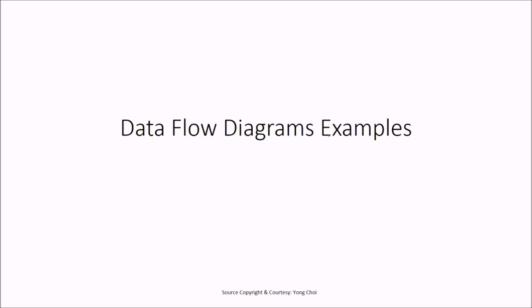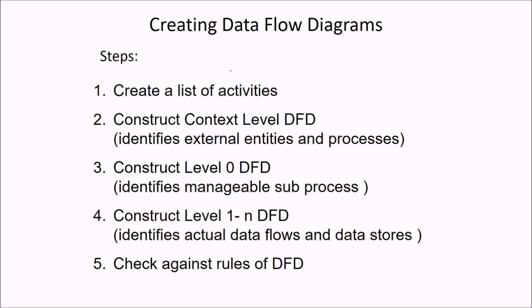Let us talk about DFD data flow diagrams with reference to certain examples. How to create a DFD? First, we have to create a list of activities, then we construct the context level DFD — that is, we identify external entities and processes. We construct the level 0 DFD; sometimes context level and level 0 DFD are made together. Level 0 DFD identifies the manageable sub-processes, then we construct level 1 to N DFD which identifies actual data flow and the data stores, and we check against the rules of DFD.